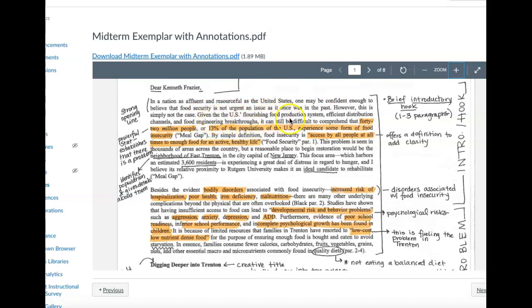Given the U.S.'s flourishing food production system, efficient distribution channels, and food engineering breakthroughs, it can still be difficult to comprehend that 42 million people or 13 percent of the population of the U.S. experience some form of food insecurity. So like I said before,